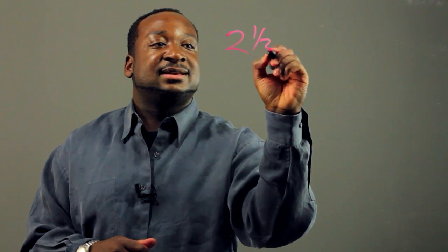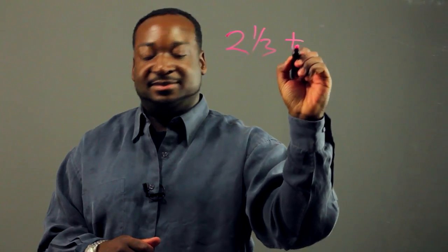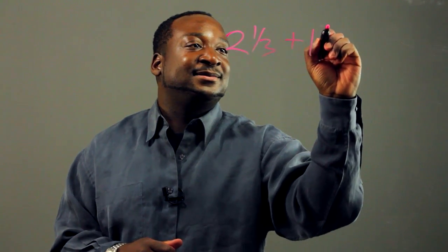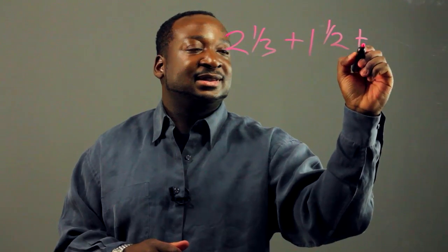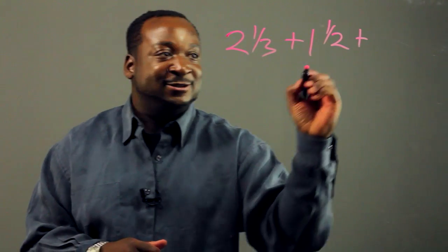Let's say, for example, we want to add two and one-third plus one and one-half plus two and two-thirds.